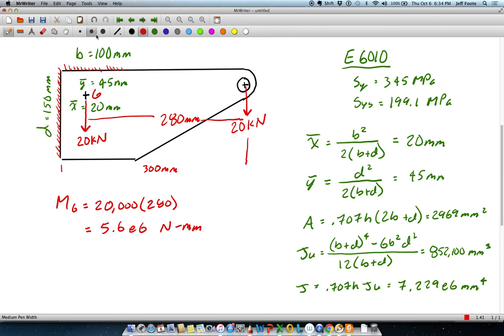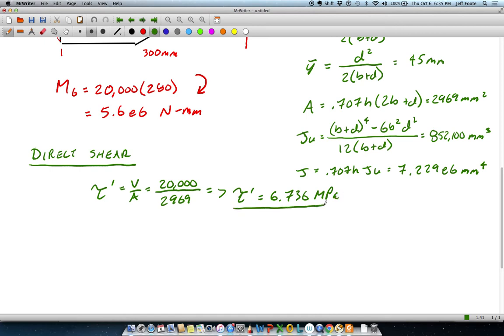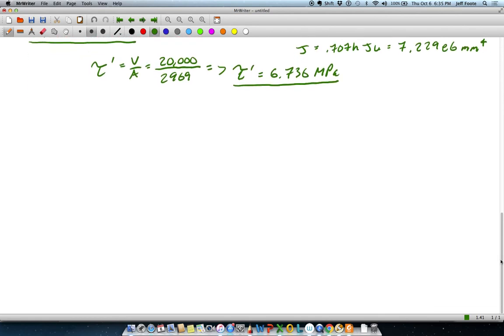That makes the moment at centroid location G equal to the force times that offset for a moment of 5.6e6 newton millimeters. And that's going to be a clockwise moment there. Alright, that's everything we need to start the actual shear calculations. Now the direct shear is as straightforward as it's ever been. We've got a shearing force of 20,000, cross-sectional area of 2969, which gives me a tau prime equal to 6.736 megapascals.